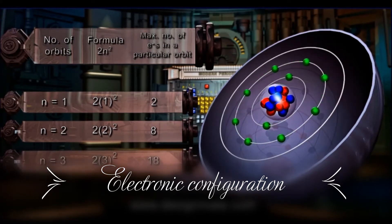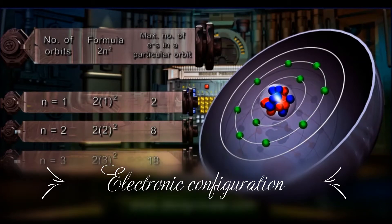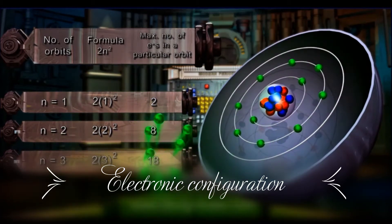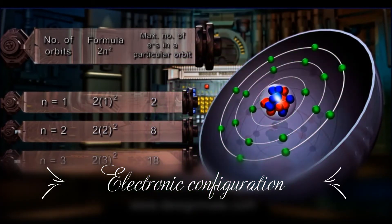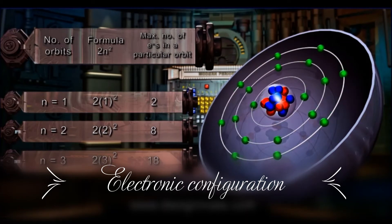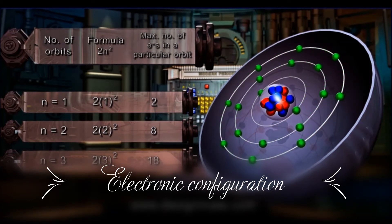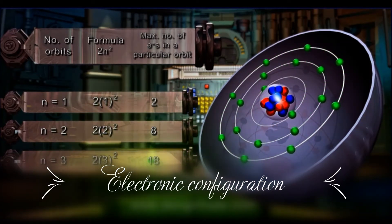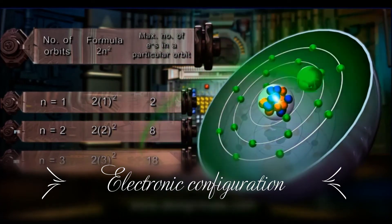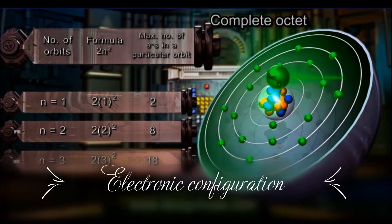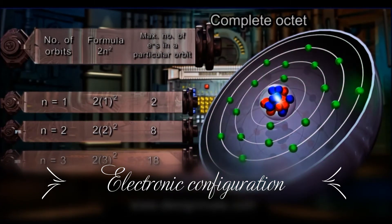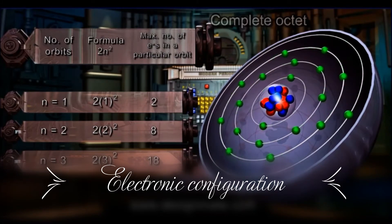Although the third orbit can be occupied by a maximum of 18 electrons, when 8 electrons are occupied in the third orbit, a certain degree of stability is given to the atom. Hence, the next electron, instead of entering the third orbit, goes into the fourth orbit.